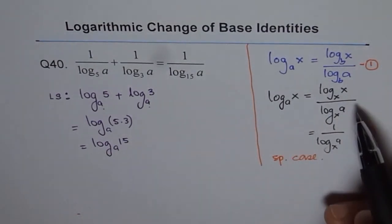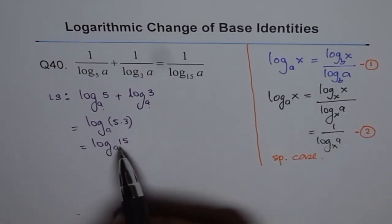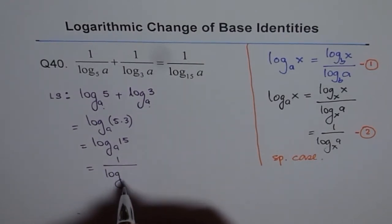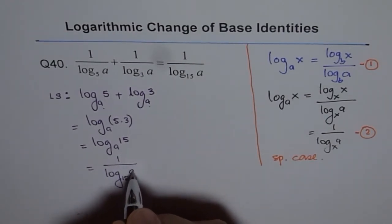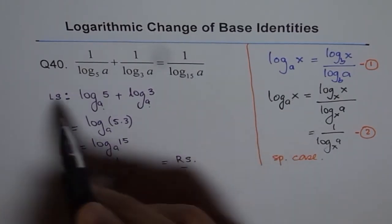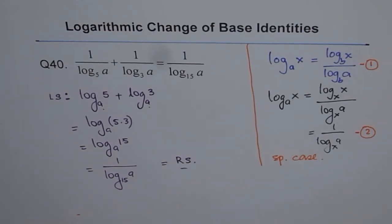Again, we apply the change of base formula. Log_a(15), if we interchange, becomes 1 over log_15(a), which is our right side. That's how we can prove such identities. I hope you appreciate this trick. Using this formula in different ways, we can prove these kinds of identities. Thank you.